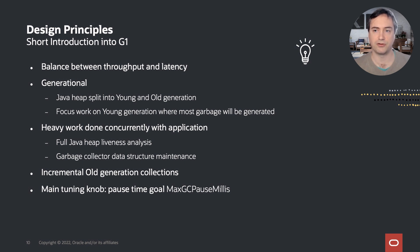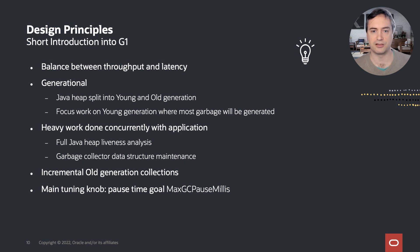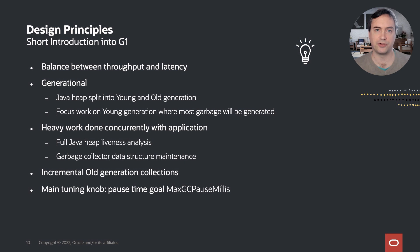To decrease pause times for collecting garbage in the old generation, G1 collects it step by step, also called incrementally. Further, G1 tries to do any lengthy work concurrent to the application, making pauses short and fairly predictable. Examples for such heavy work moved out of the pauses are liveness analysis of the entire Java heap and garbage collector data structure maintenance. With G1, there is one very important thing to remember: the main tuning knob is the pause time goal, specified with the -XX:MaxGCPauseMillis option. G1 will try to keep that pause time for you. Make sure to consider tweaking this if the pauses are too long, as by default this time span is 200 milliseconds.